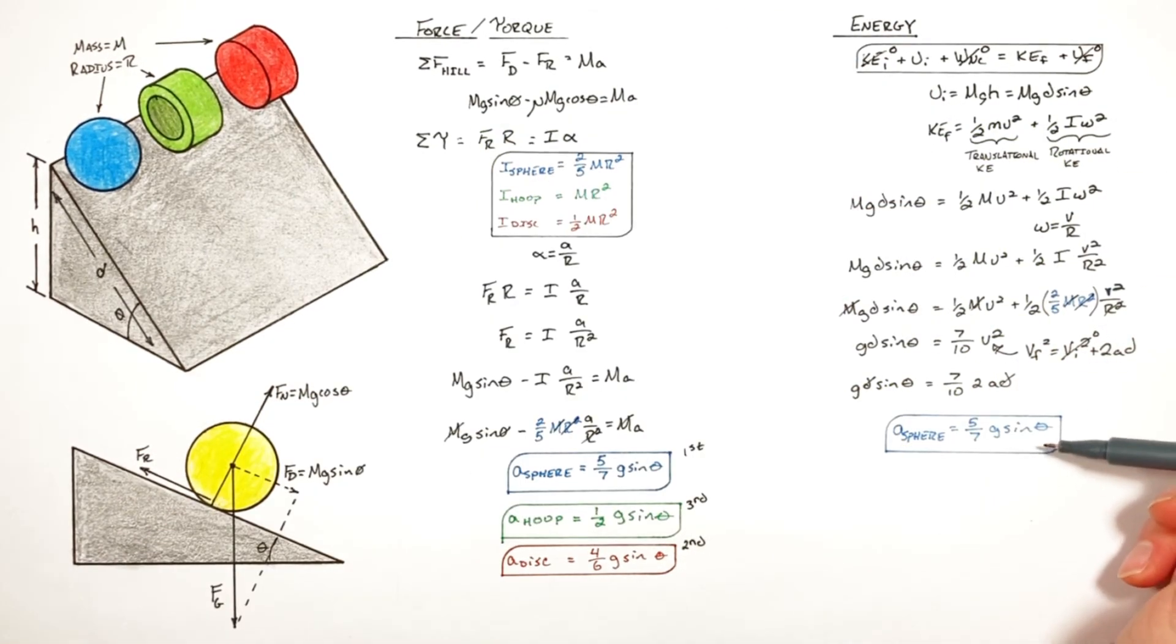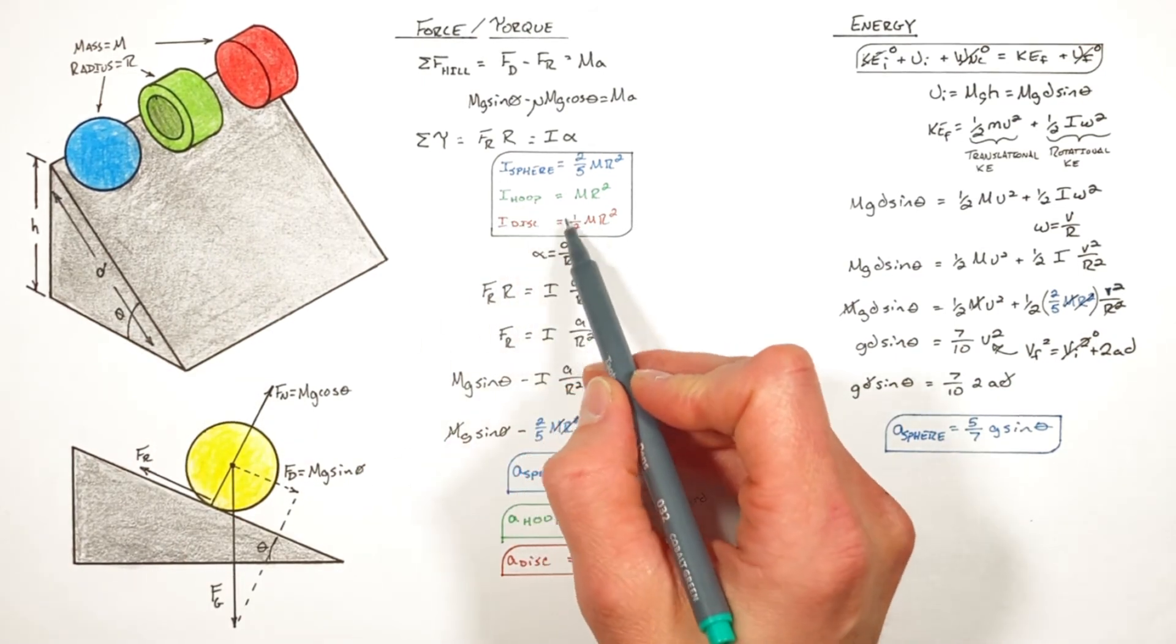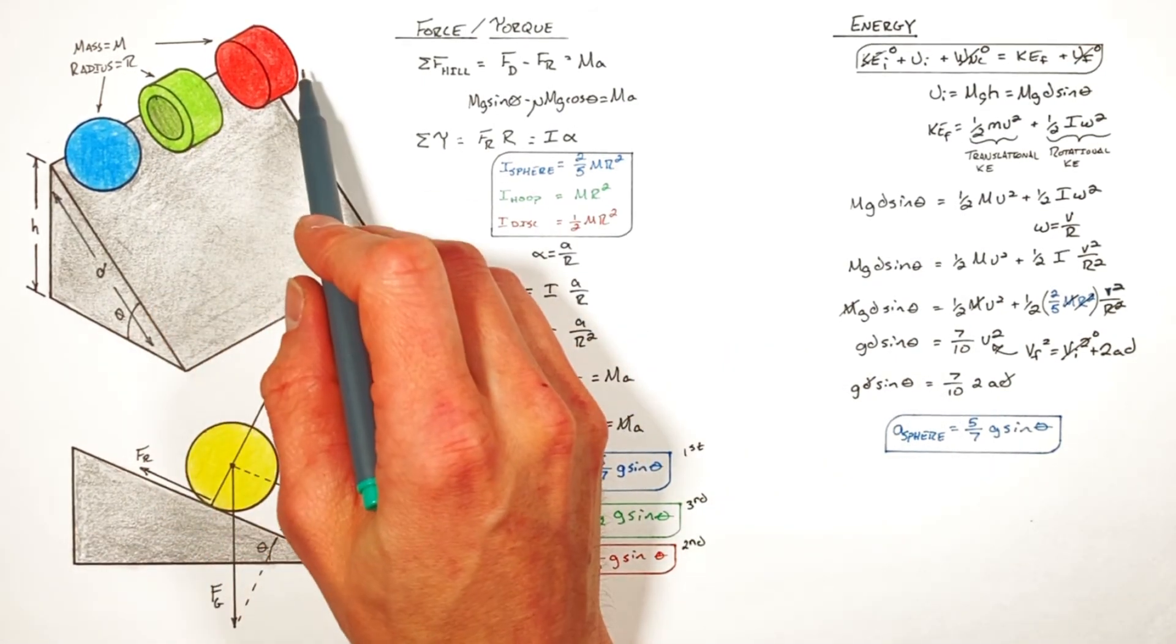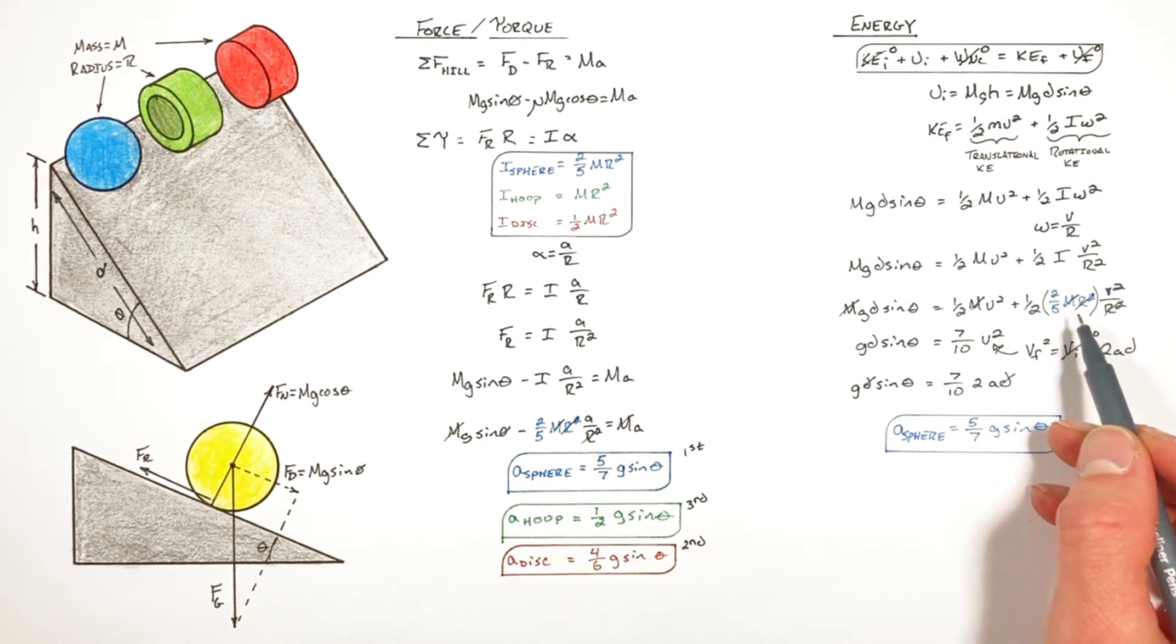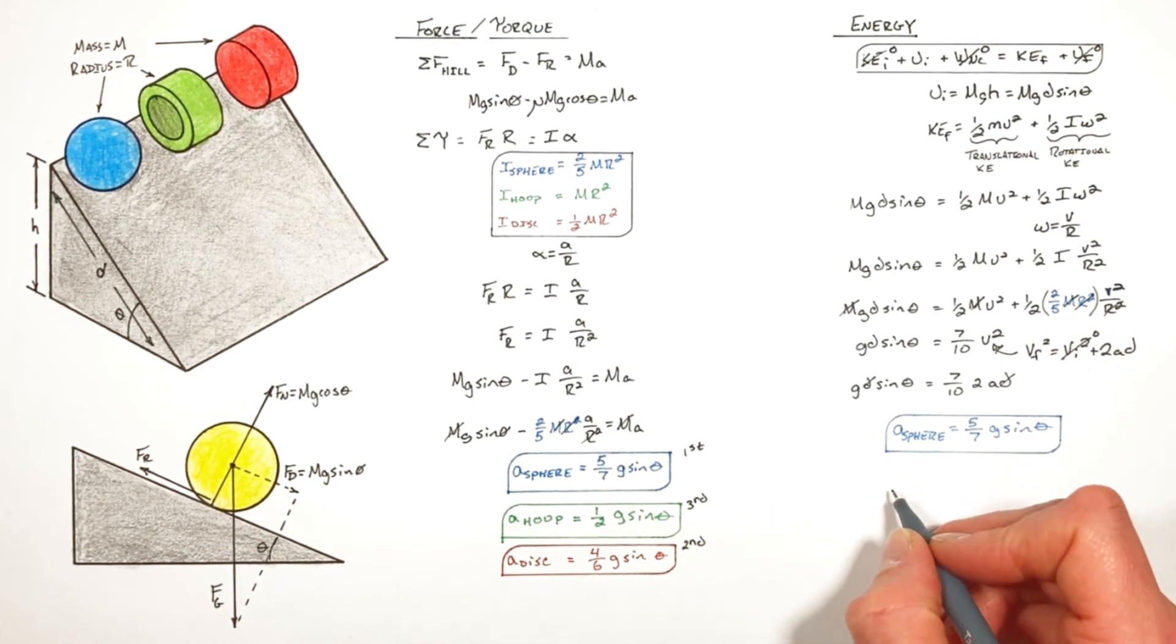And we're again left with the acceleration of this sphere down the hill. And by plugging in different rotational moments of inertia for these other two objects right here in this function, we can solve the acceleration of the other objects as well.